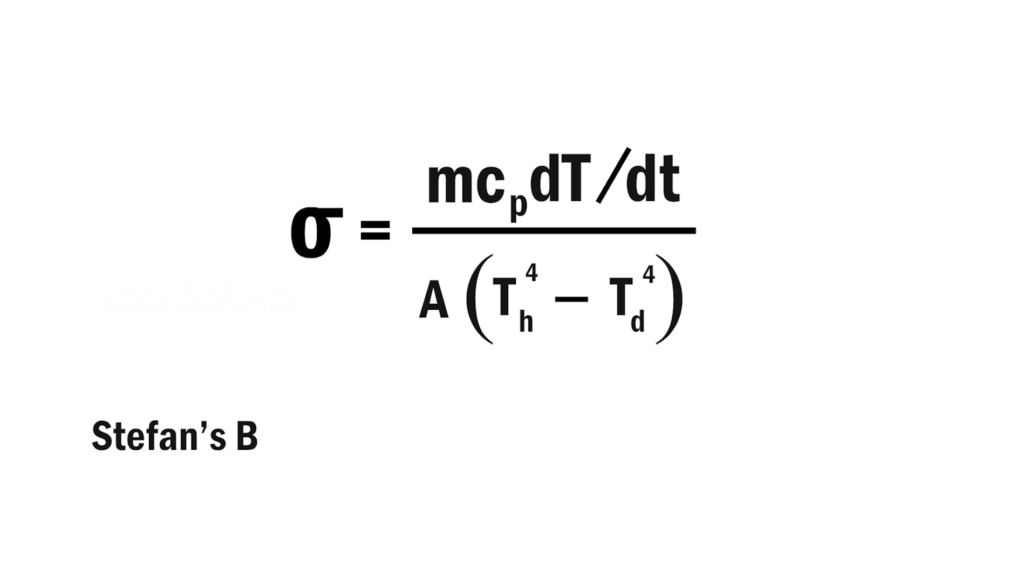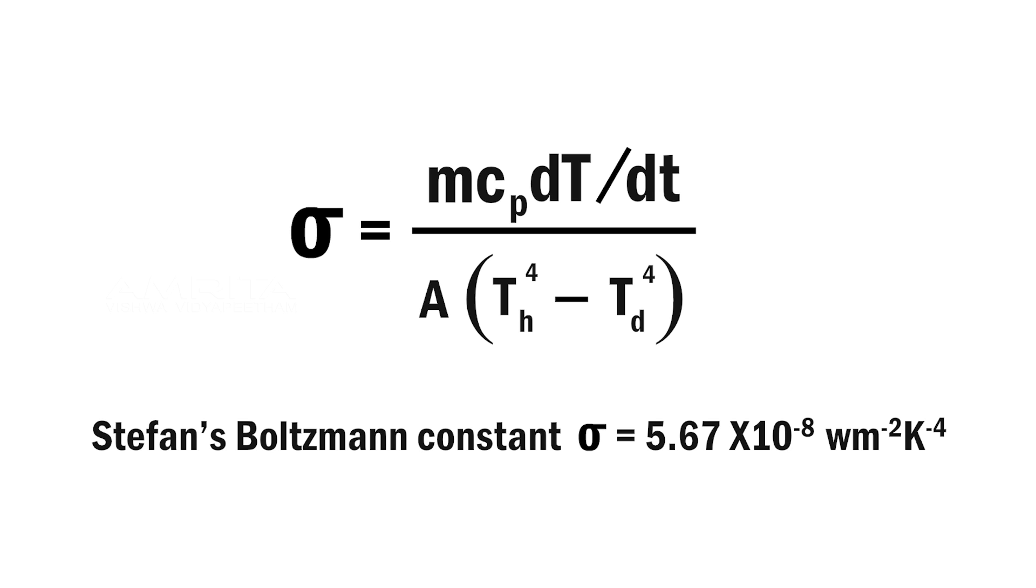Here our aim is to determine the Stefan-Boltzmann constant, sigma equals 5.67 into 10 raised to minus 8 watt per meter square per Kelvin raised to 4.